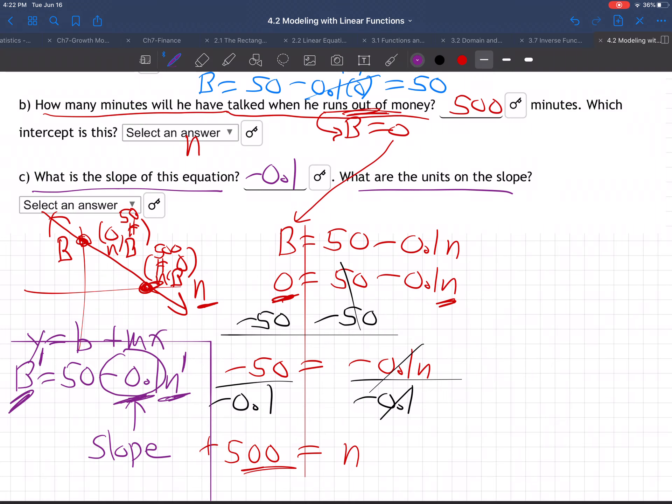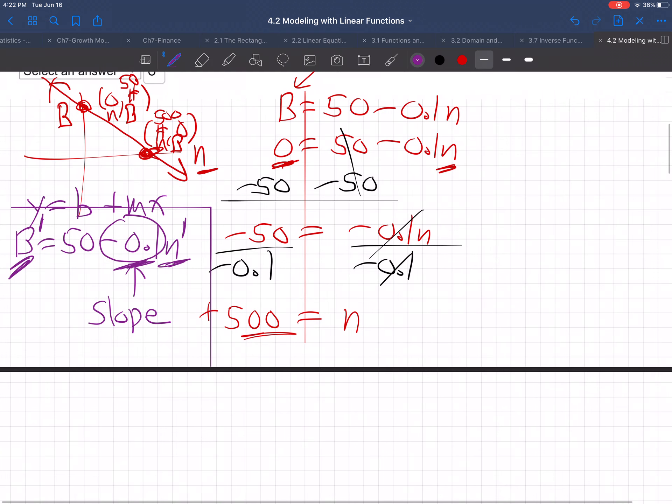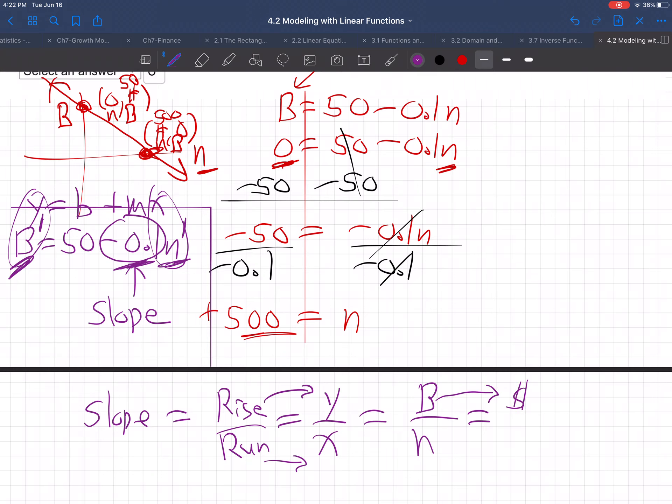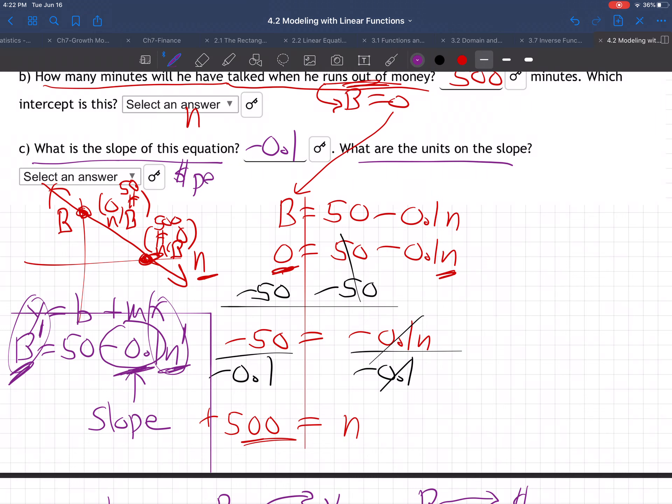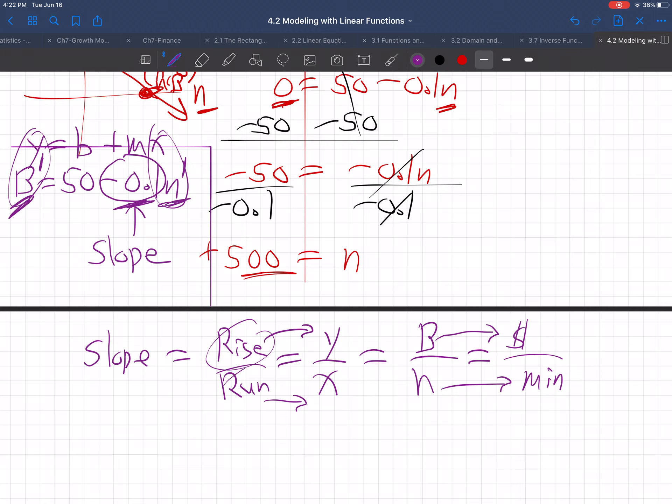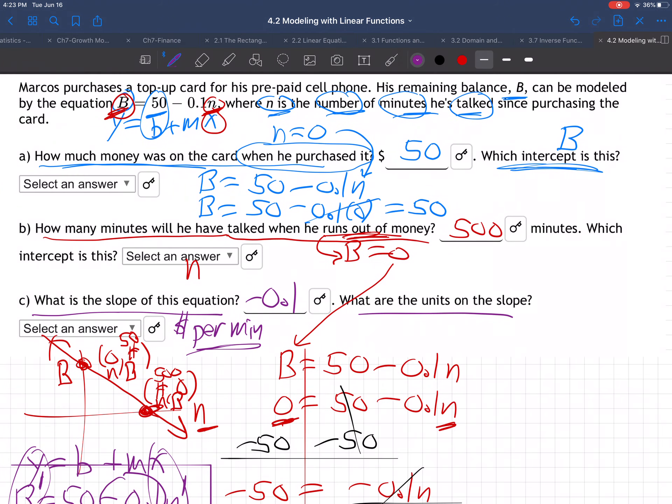What are the units on the slope? Remember, slope is always rise over run, Y over X. In this case, Y is B, which is balance in dollars, and X is N, which is minutes. So the units are dollars per minute. The slope of -0.1 means the balance decreases by $0.10 for each minute talked. That's a real-life application of a linear function.